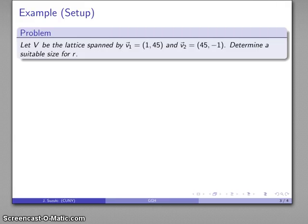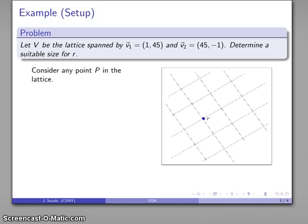Let's take an example. Suppose I have a lattice that's spanned by two vectors, (1, 45) and (45, -1), and I'm going to determine a suitable size for my noise vector. I might consider what my lattice looks like. Here's a rough sketch of what it is. I'm going to take some point P in the lattice.